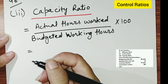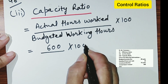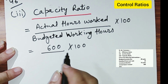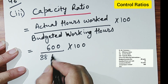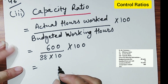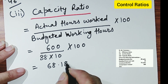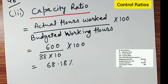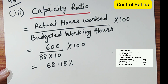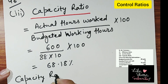Actual hours worked from the question is 600, upon budgeted working hours, which is budgeted production of 88 units multiplied by standard hours per unit of 10. So 600 upon 880, multiplied by 100. Solving gives the capacity ratio of 68.18%.